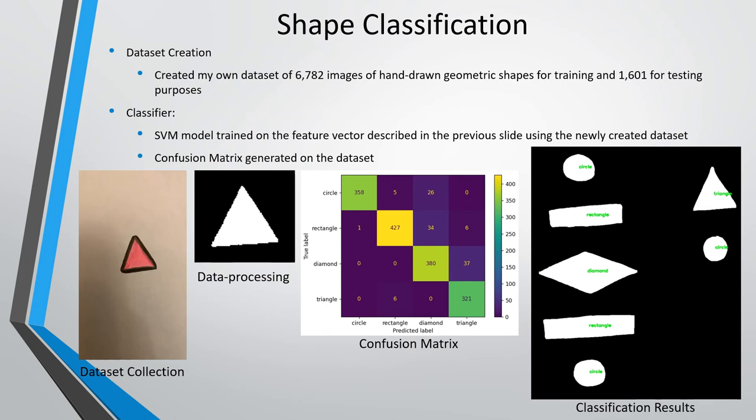To do shape classification, I'll be training an SVM model. Since there is a clear margin of separation between the shapes classes, SVM would work relatively well. When looking for datasets, I was only able to find datasets of synthetically generated shapes, but the reality about hand-drawn shapes is that it's very difficult to draw a perfectly symmetrical shape and different people will draw the same shape in slightly different ways. Therefore, I decided to create my own dataset of hand-drawn shapes containing circles, diamonds, rectangles, and triangles.